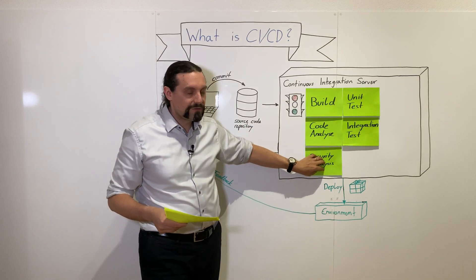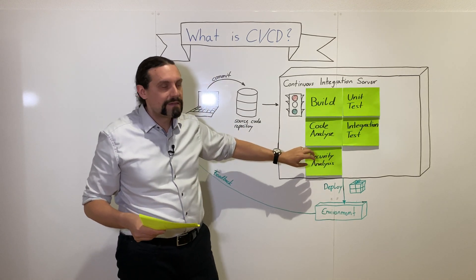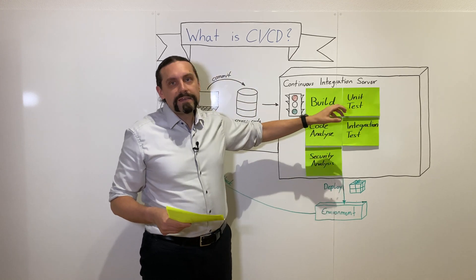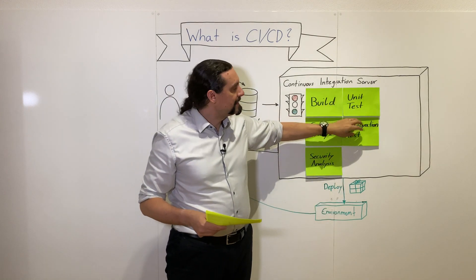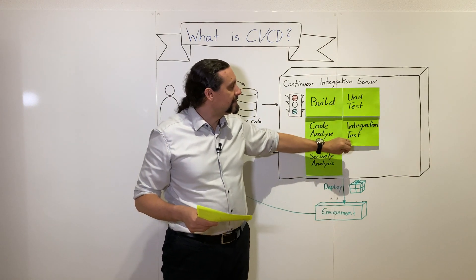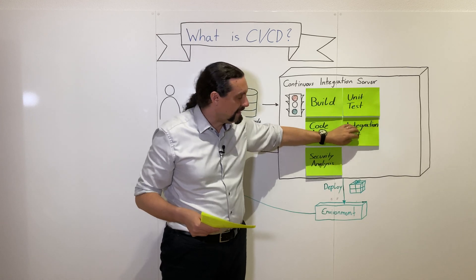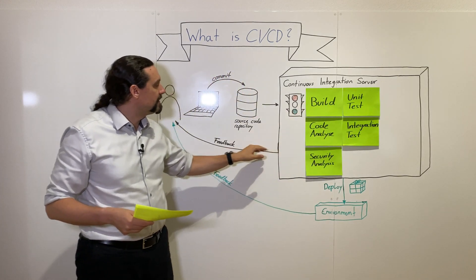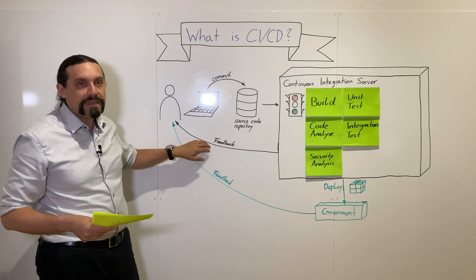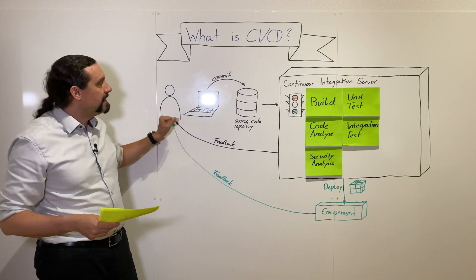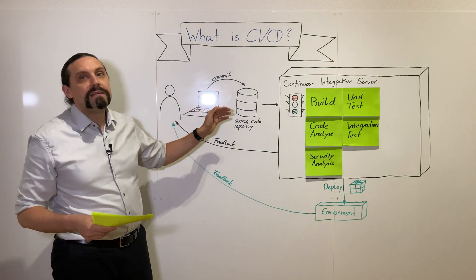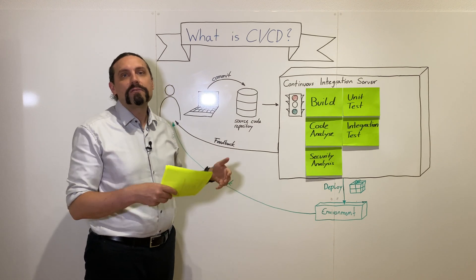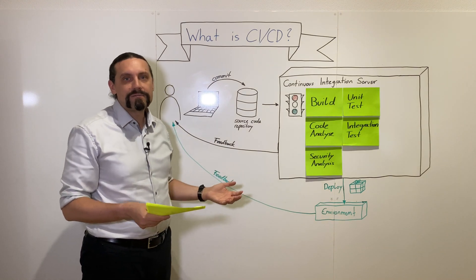It will also do the static security analysis on that source code, execute all of the unit tests, and then execute all of the integration tests. Then the developer gets feedback if everything has been integrated. This was the CI step, the continuous integration step.